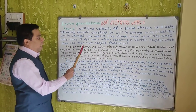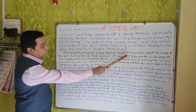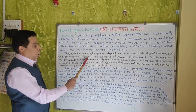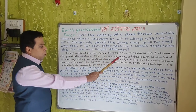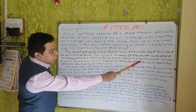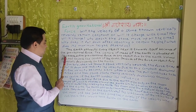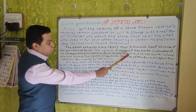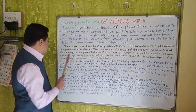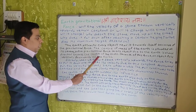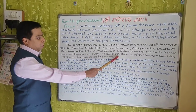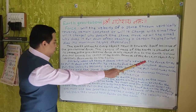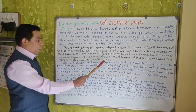The Earth attracts every object near it because of the gravitational force. The center of mass of the Earth is situated at its center, so the gravitational force on any object due to the Earth is always directed towards the center of the Earth. Because of this force, an object falls vertically downwards on the Earth.